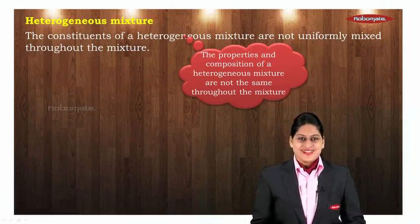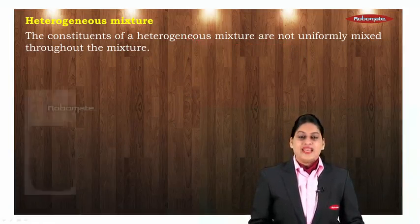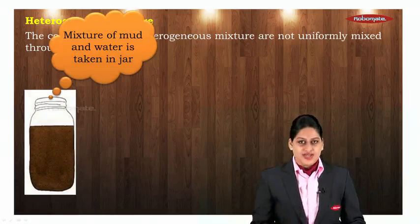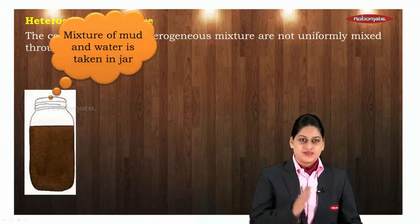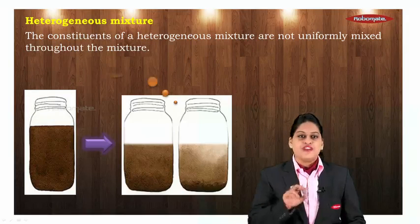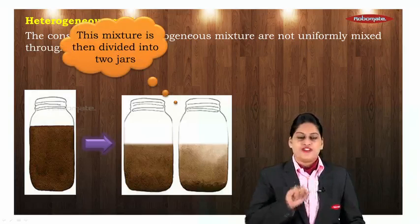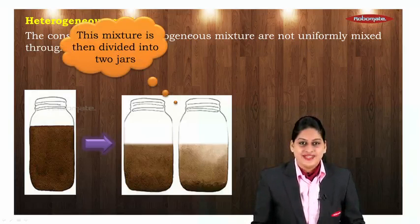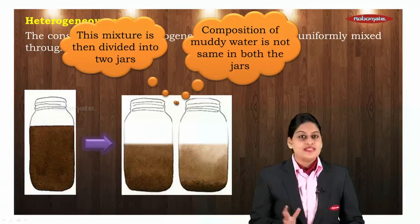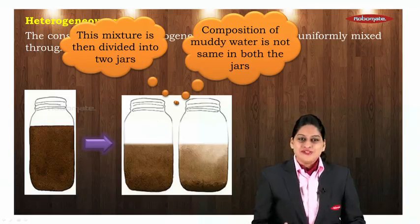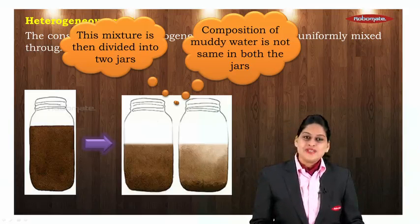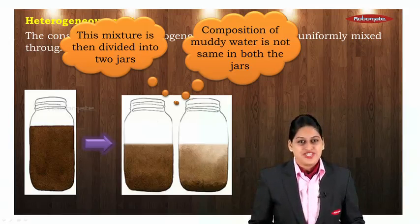Now what does this mean? To understand this, let me take one example. I am taking muddy water — that means in a jar, I have taken a mixture of mud and water. If I put this muddy water into two different jars, can you see the difference? The composition of muddy water is not the same because in a heterogeneous mixture, the constituents are not uniformly mixed. So muddy water becomes an example of heterogeneous mixture.